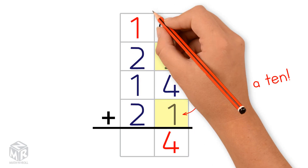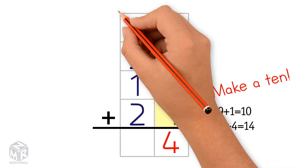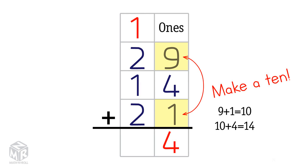Now we add the tens. 1 plus 2 plus 1 plus 2 equals 6. So 29 plus 14 plus 21 equals 64.